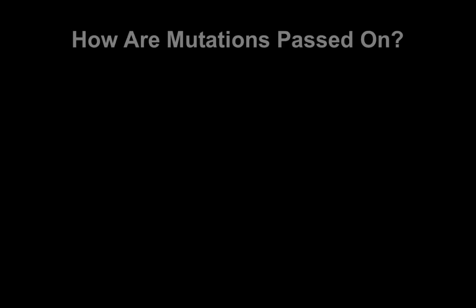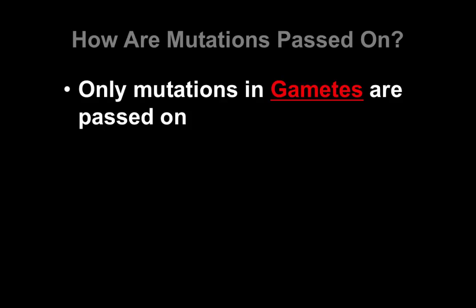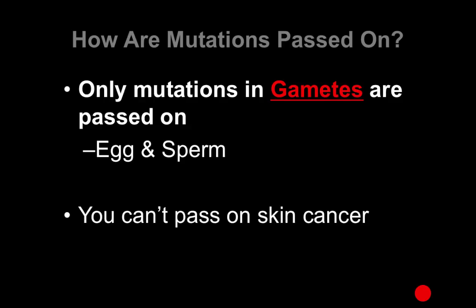Finally, let's look at how mutations can actually be passed on to your children. Only mutations that occur in gametes — your sex cells — are actually passed on, because only the DNA in your egg or sperm cells turns into a child. This is good, because it means you can't pass on things like skin cancer — you can only pass on mutations that have occurred in those gametes.